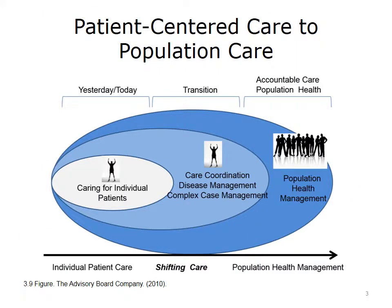This graphic displays a movement from patient-centered care to population health care. Our health system of yesterday and today is represented by caring for individual patients. As we shift from individual patient care to population health management, we are potentially in a transition moving toward the future of accountable care. In this transition, physician groups become responsible for coordinating care, management of disease, and management of very complex, high-risk, high-cost patients.